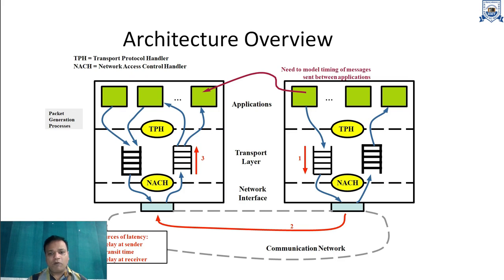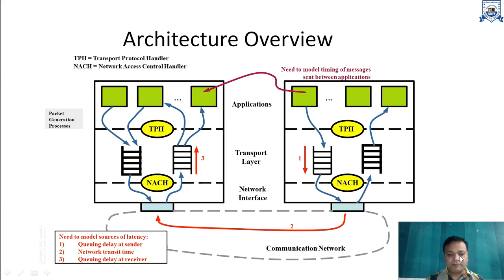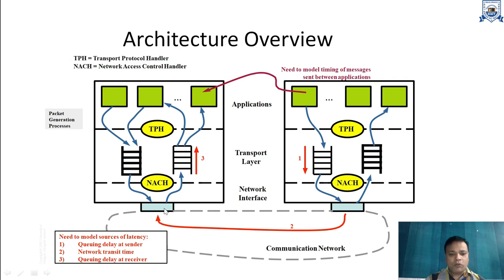This is the overall architecture in real-time communication. There are two devices, each running various applications. A particular application on one device wants to communicate to an application on the other device. The architecture includes an application layer, a transport layer, a network interface, and a physical layer on which the data actually flows from one node to another node.